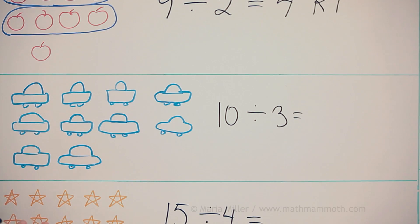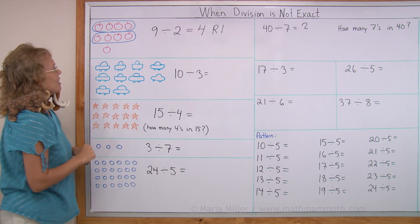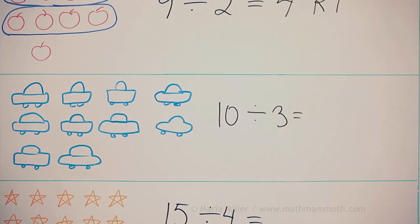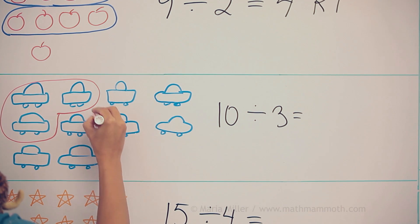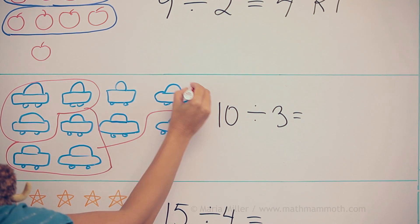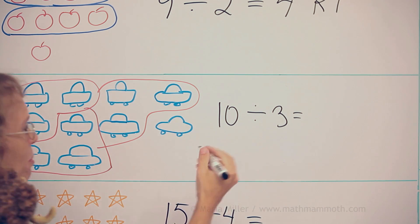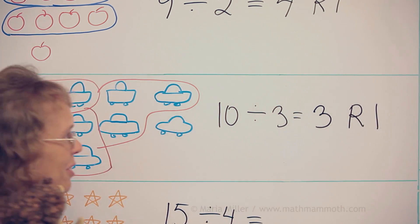We have ten toy cars and divide by three. Let's say we have three players in a game, so they want to share these cars evenly. How many would each get? I can see, let's say we would have one person get three and then another get three, another get three. And again, one left over. So each person gets three and we have one left over. Remainder is one.